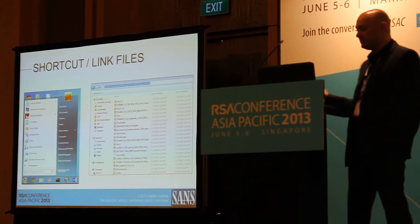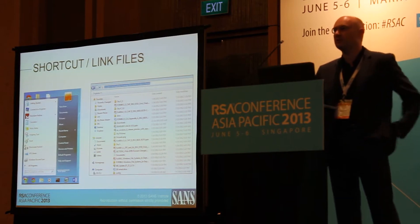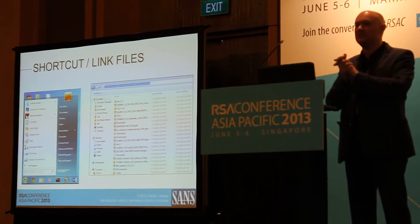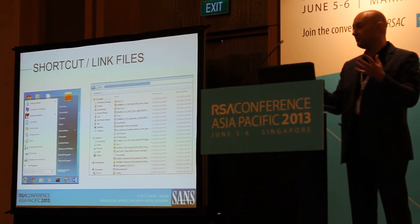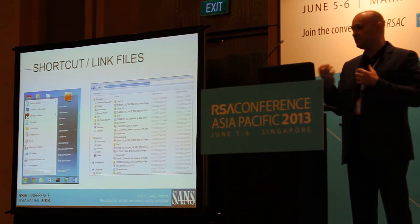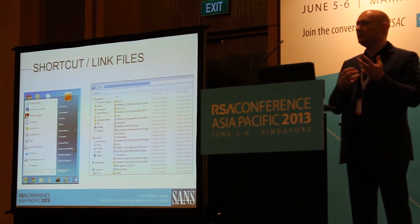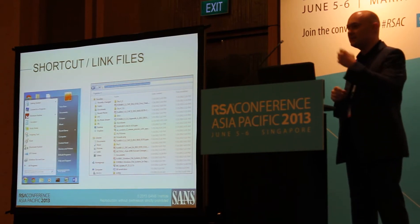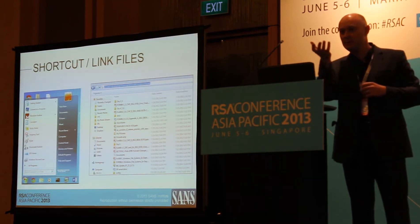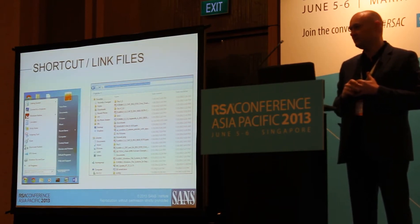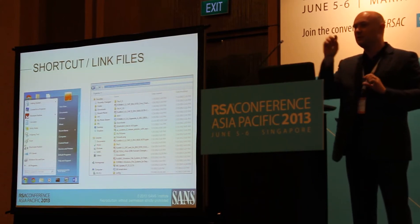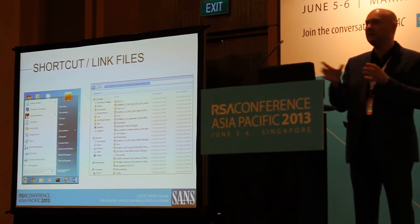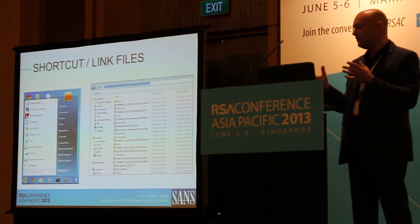Your programs folder — all the programs you have and the various subfolders in there — are nothing more than a collection of shortcut files. By examining those as a forensic examiner, you can look at things like when were they installed, when was the shortcut created, when was the last access — which might indicate when the program was last used. Your recent folder in the start menu is also simply a collection of link files, the shortcut files.